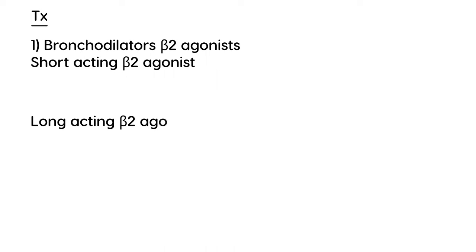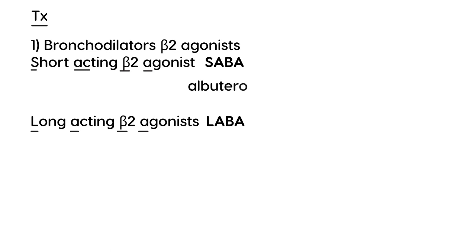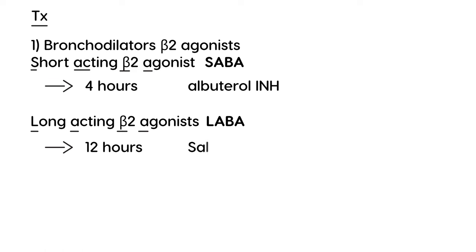There are short-acting beta-2 agonists, sometimes referred to as SABA, and long-acting beta-2 agonists referred to as LABA. The most common short-acting example is albuterol, given as an inhaler, working up to four hours. The most famous long-acting example is salmeterol, working up to 12 hours, also given as an inhaler.